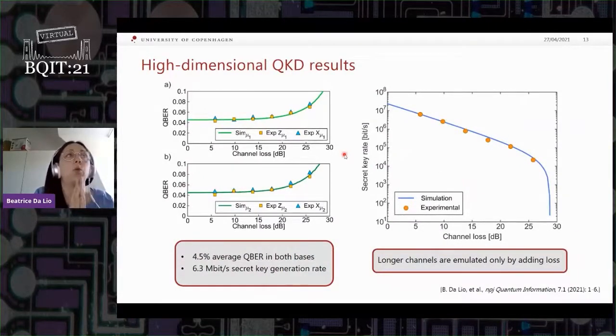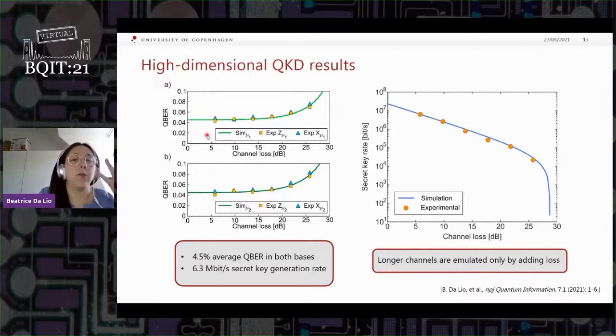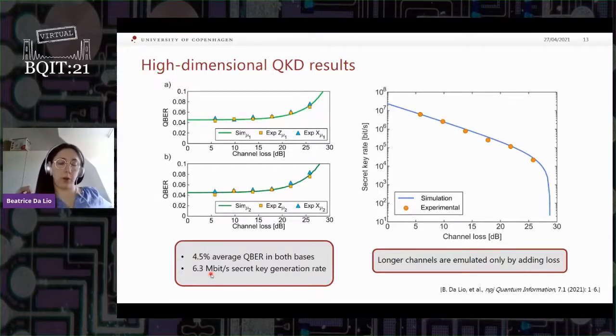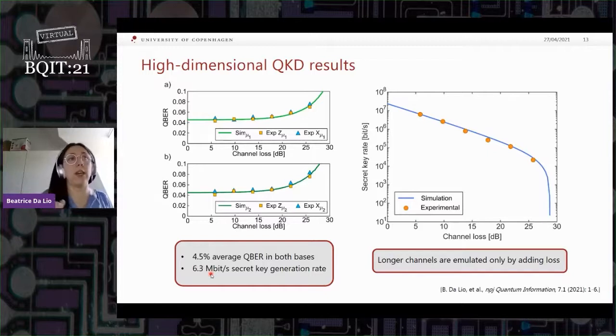So if we want to use our setup to go towards a QKD implementation, then we can think about implementing a BB84 four-dimensional protocol with coherent pulses with one decoy state. And then what that means is that we need to measure the QBER in four different configurations. If we do that, we get as an average 4.5 percent, which leads to an overall secret key generation of 6.3 megabit per second, which means that we actually achieve similar performance as other more common degrees of freedom in QKD like time bin encoding. What we also did was to emulate longer channels by just adding more losses to our fiber, and the results are all shown here.